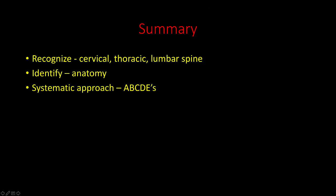In summary, when you first approach a spine radiograph, identify whether it is cervical, thoracic, or lumbar spine, identify the normal anatomic structures, and use a systematic ABCDE approach to identify any abnormality. Thanks for your attention.